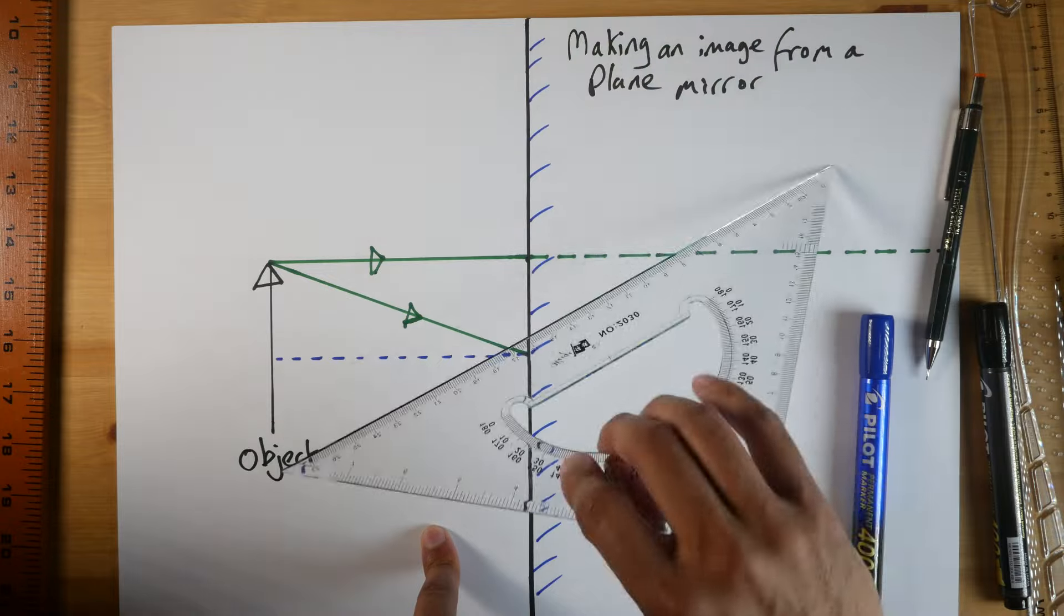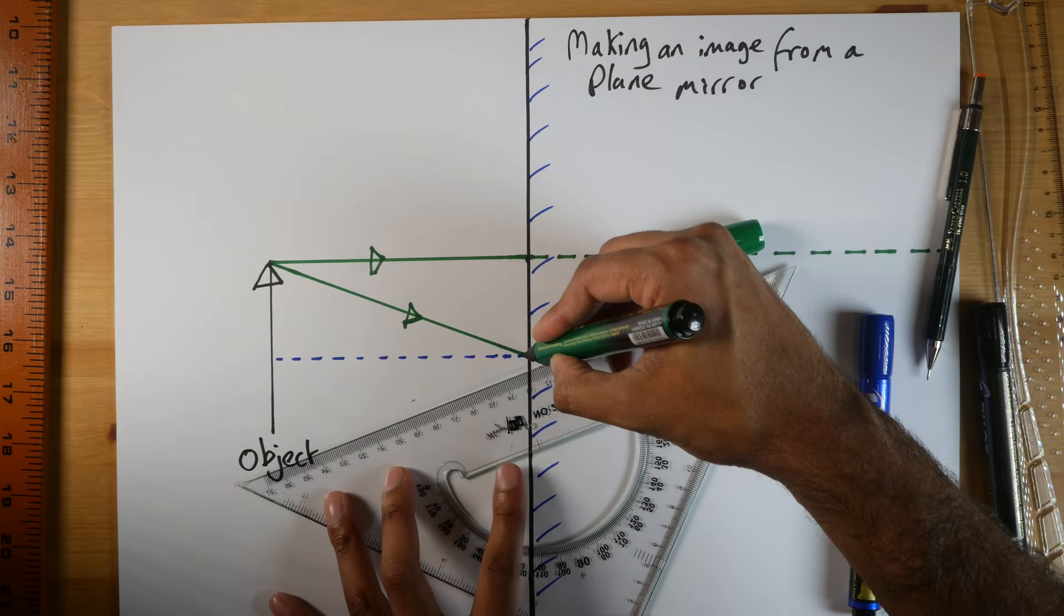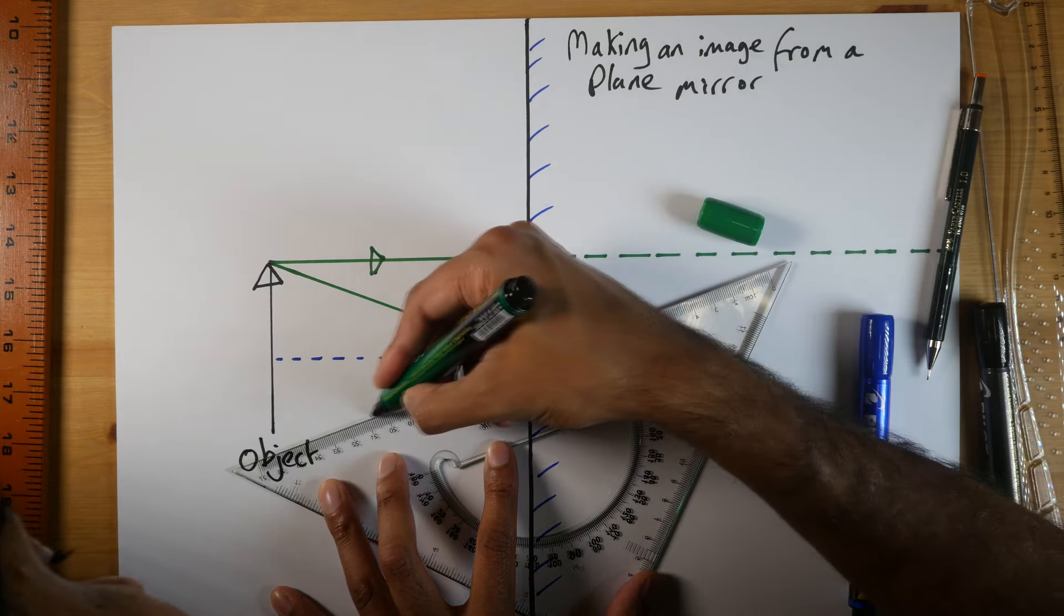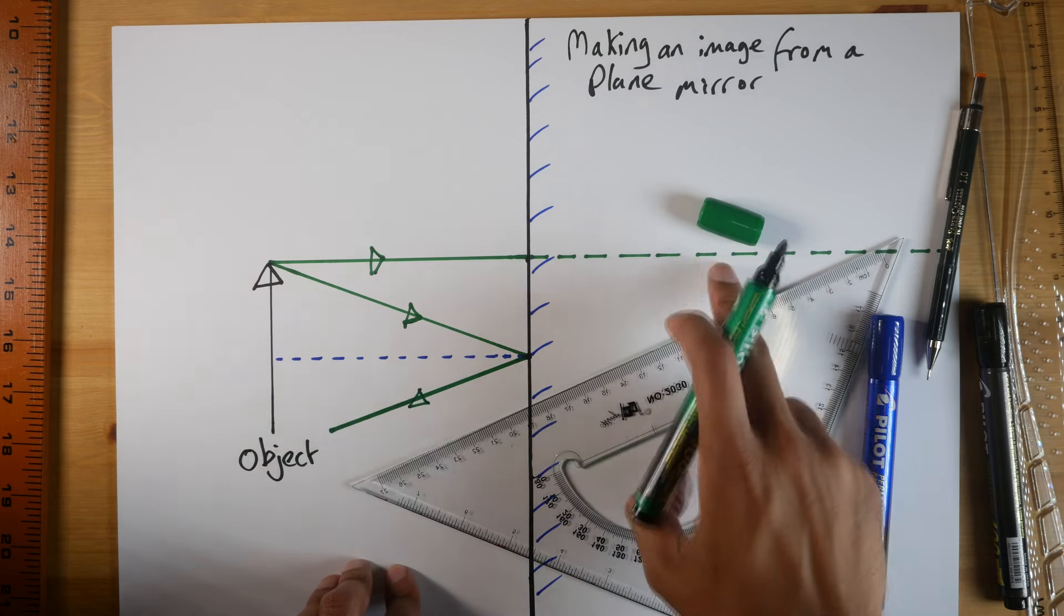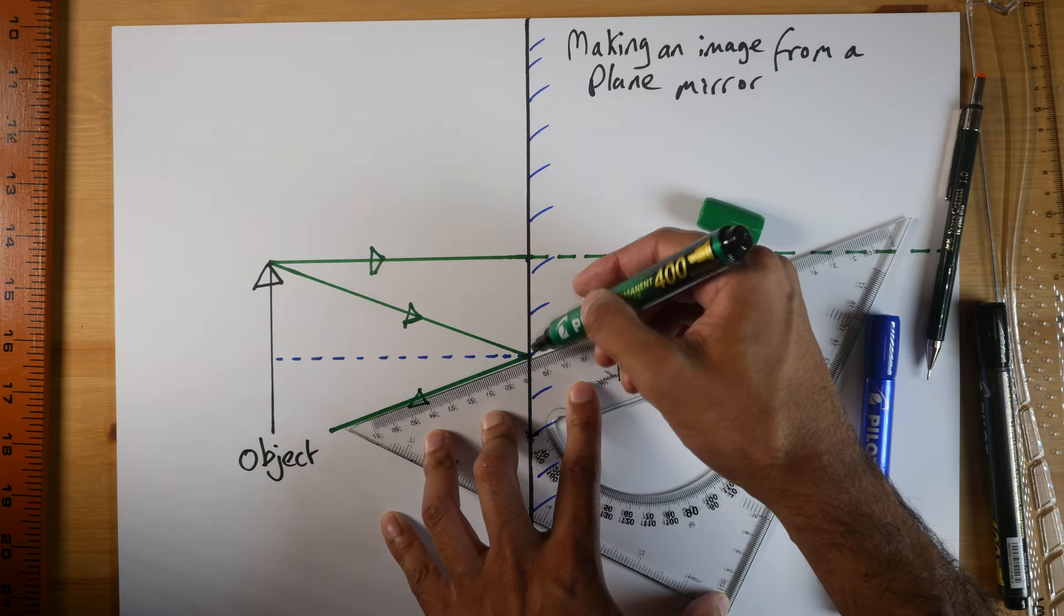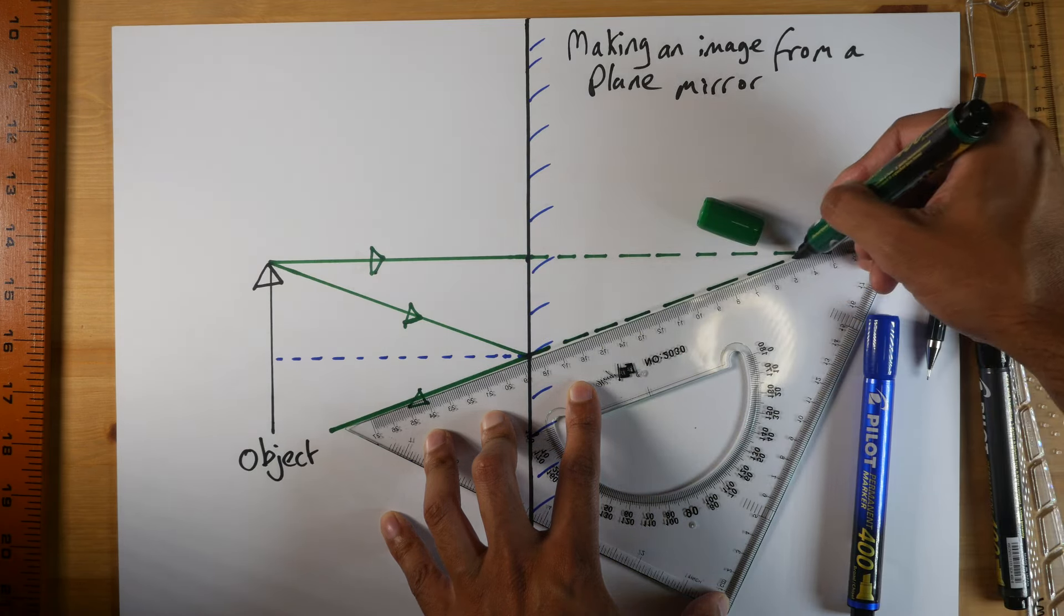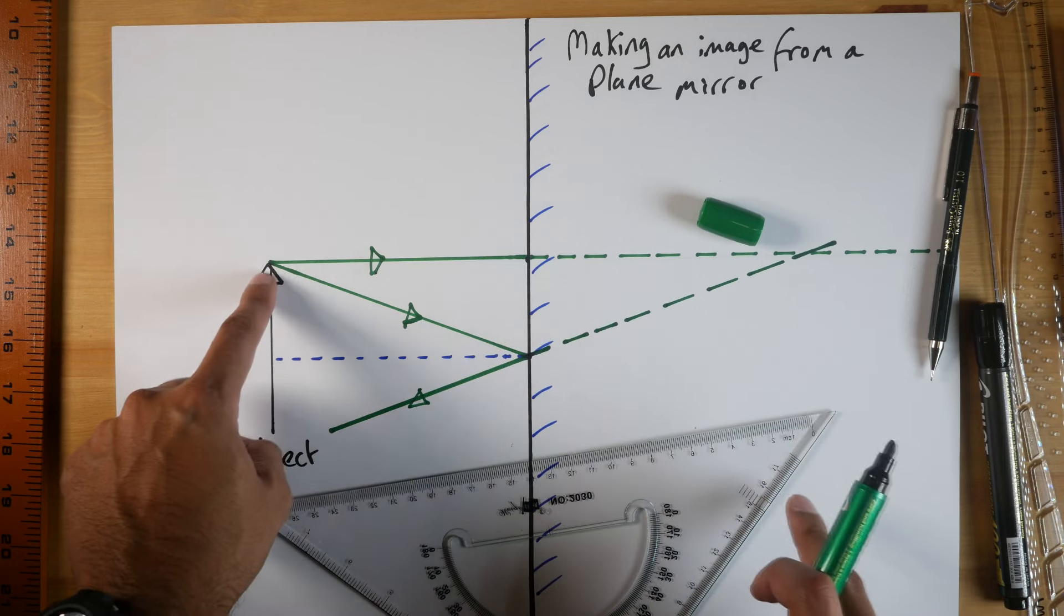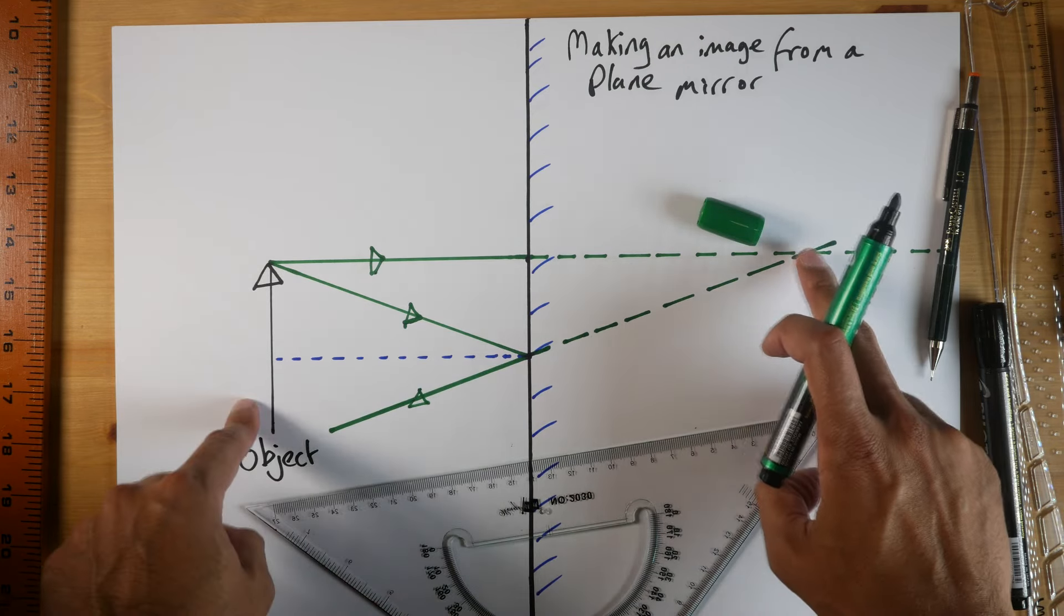Now make sure you're accurate and make sure you can hit this mark. There we are. And as I said before, what I'm going to do, just like I did with that one, is I'm going to extend this line all the way back, trying to be as accurate as I can. And you can see where the two lines cross. And that's where that point of the image, that's where that is. So the image forms up over here.